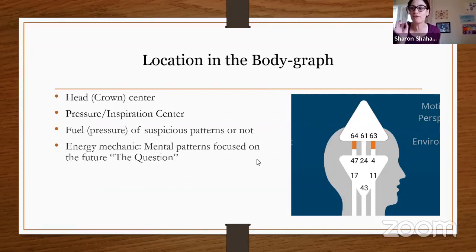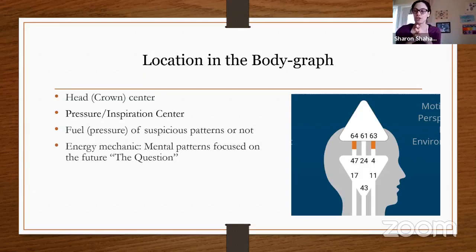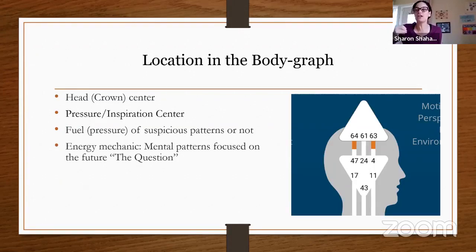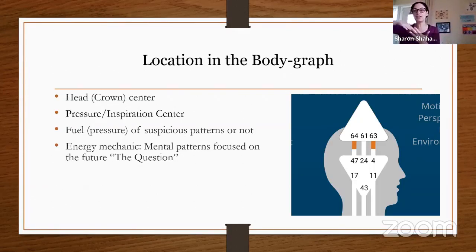When doing a chart reading — if you have the 9 or the 52, you can start reading keynotes from other logical gates in your chart. You can use the keynotes from other gates even if you don't have the whole channel. For example, gate 5 is about a logical rhythm that is very predictable; people with gate 5 are always on time. You can weave the keynote from the logical rhythm of the 5 together with other places where you have logical definition. That's how we read the chart.